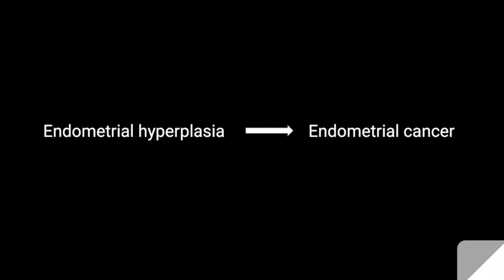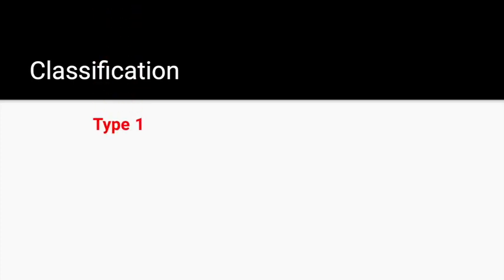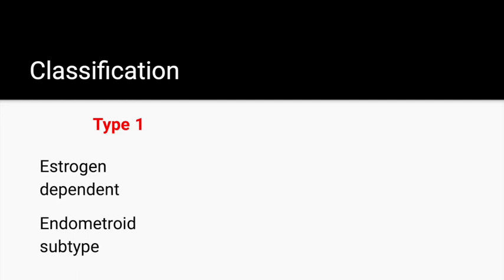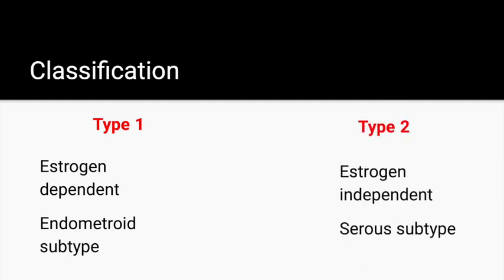There are two types of endometrial cancer. Type 1 is estrogen-dependent, more common in real life and on the boards — it is the endometrioid subtype and will be the main focus of this video. Type 2 is estrogen-independent, called the serous type. It is less common but more aggressive, and occurs due to a mutation in the p53 tumor suppressor gene.